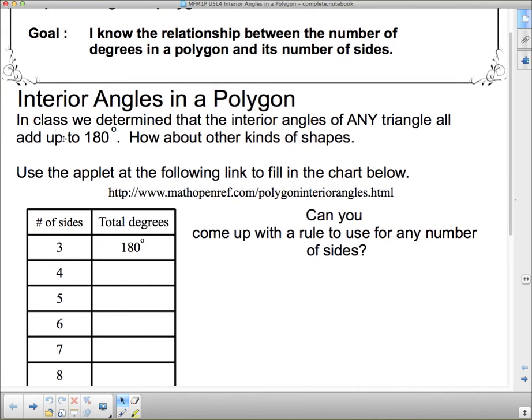So our goal is I know the relationship between the number of degrees in a polygon and its number of sides. We're talking about the interior angles of a polygon. We know that all of the interior angles in any triangle add up to 180 degrees, as long as it has three sides and it's a closed figure. If I add up those three angles, I get 180 degrees.